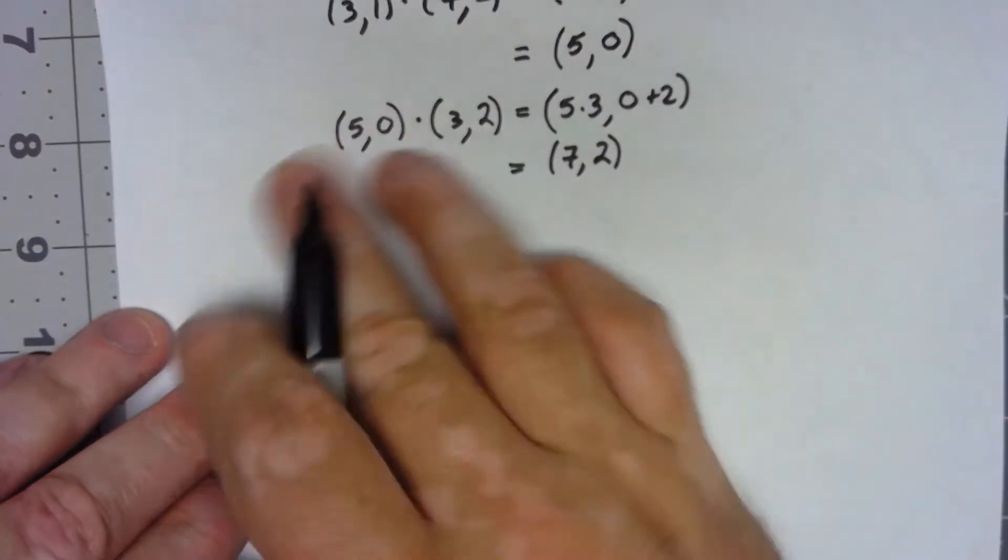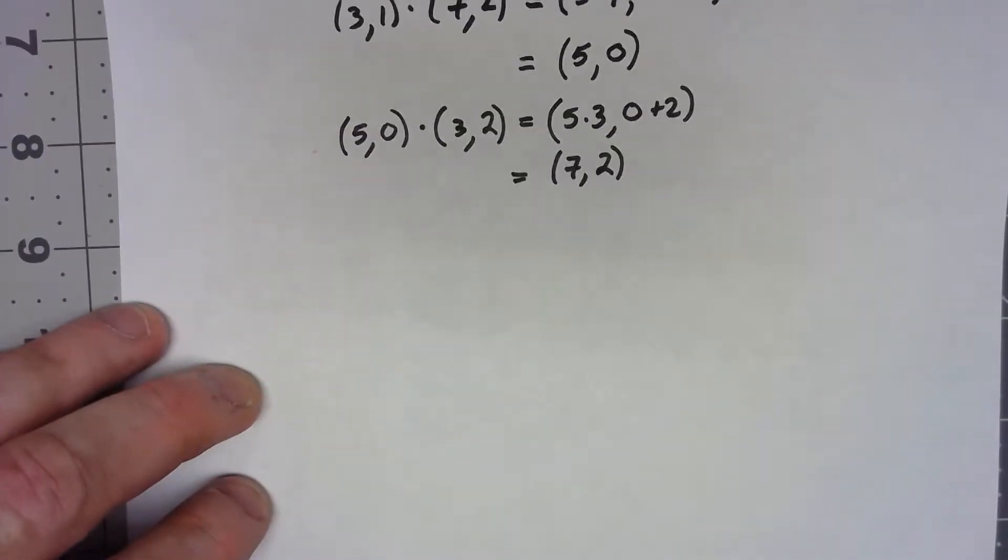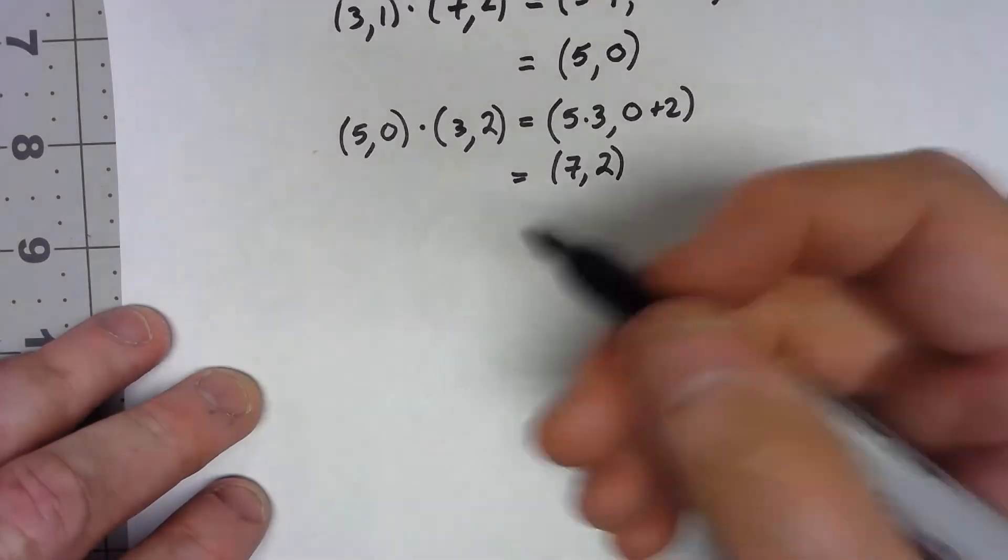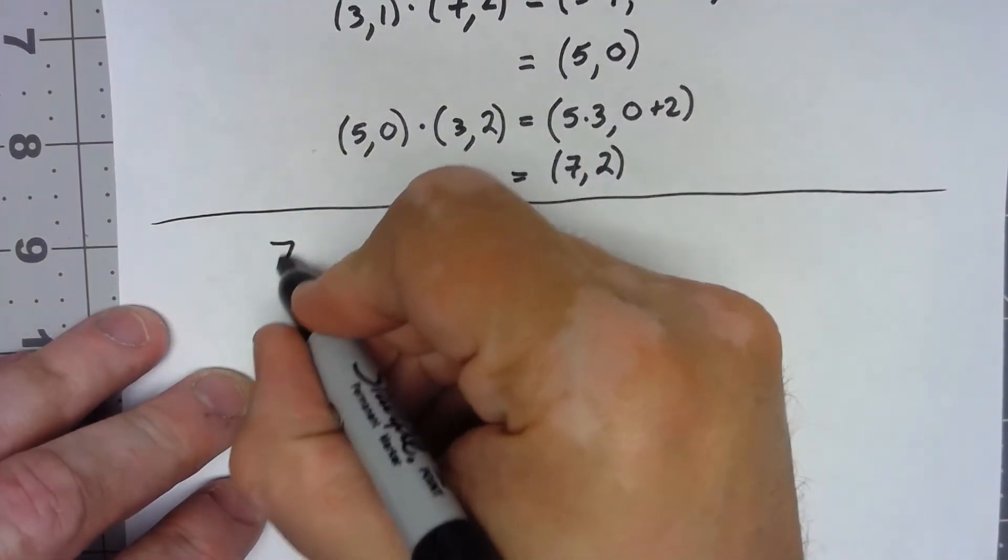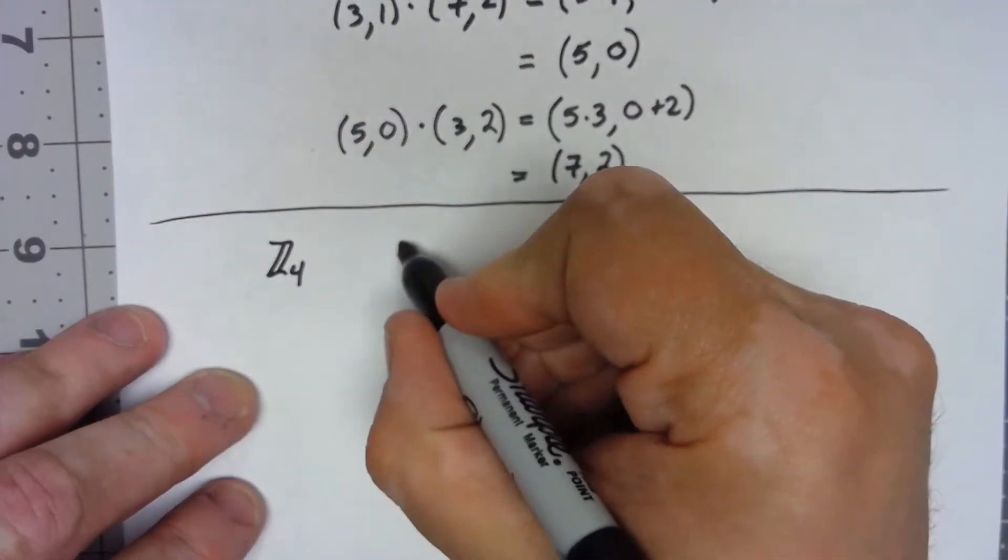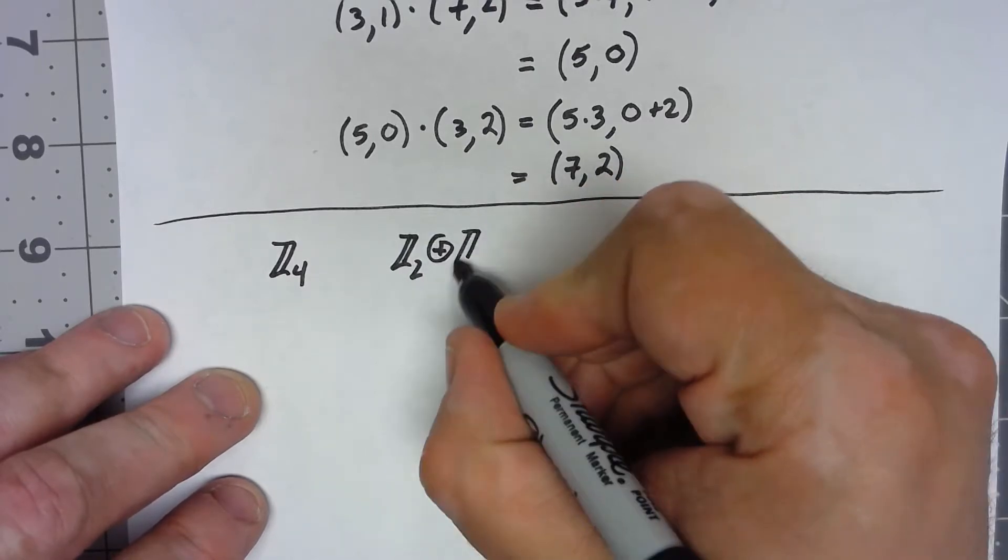Now, what's interesting about this is that it lets us, when we combine it together with the whole idea of isomorphisms, get some pretty interesting results. For example, up to isomorphism, the only two groups that there are with four elements are Z4 and Z2 direct product with Z2.